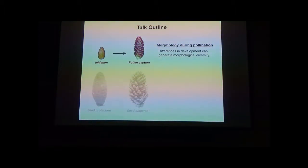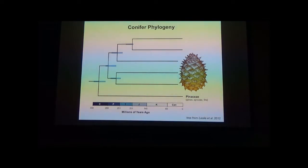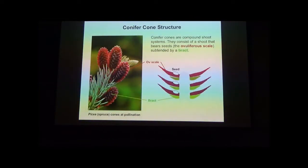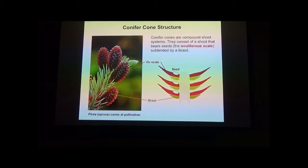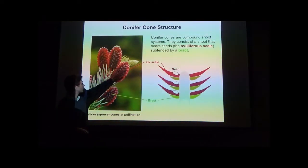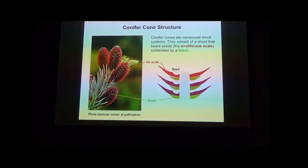This first set of projects takes place entirely in the Pinaceae—spruces and fir cones. All conifer cones, with the exception of the Taxaceae, are compound shoot systems. Any cone has an axis and a system of branches. The branch bearing a seed is called the ovuliferous scale—the typical scale you see in a conifer cone. That shoot system is subtended by a small leaf called a bract. On a pollination-stage spruce cone, the bigger red structures are the ovuliferous scales, and the whitish structure below is the bract.